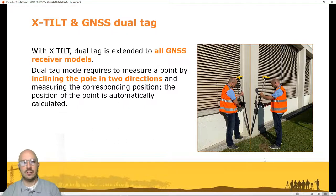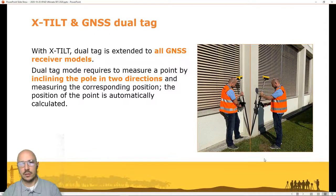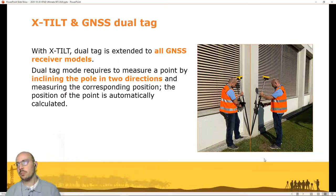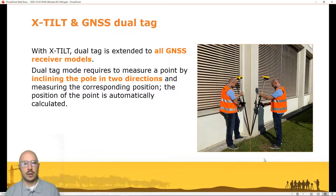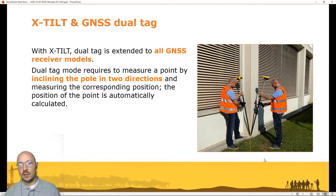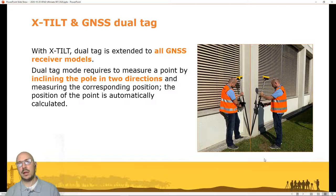The Dual Tag method allows measuring hidden points — for example a corner of a building or a marker under a car — where you cannot stay vertical with the pole, in a very fast and easy way by taking two tilted pole measurements. The software automatically calculates the position of the point. In general the accuracy is the same as the GPS — if the GPS gives you one centimeter error, the Dual Tag may add a few millimeters. The recommended maximum tilt angle is 30 degrees, as beyond that the antenna is not designed to work that way and multipath errors may occur.